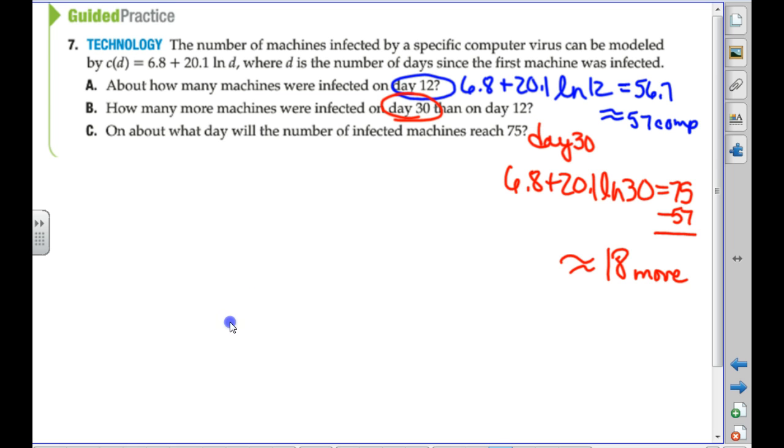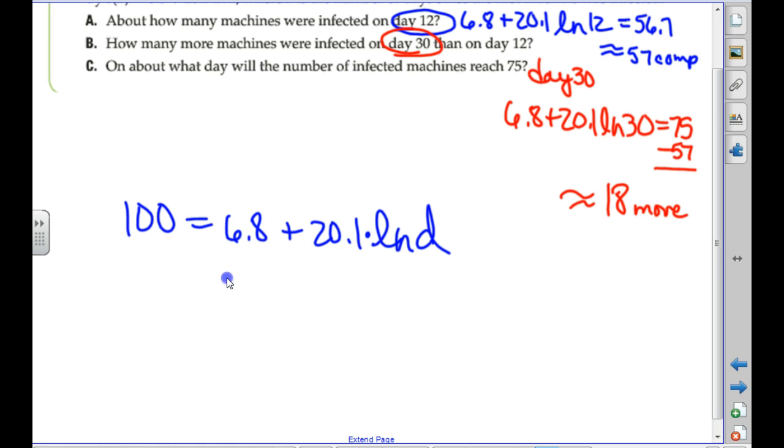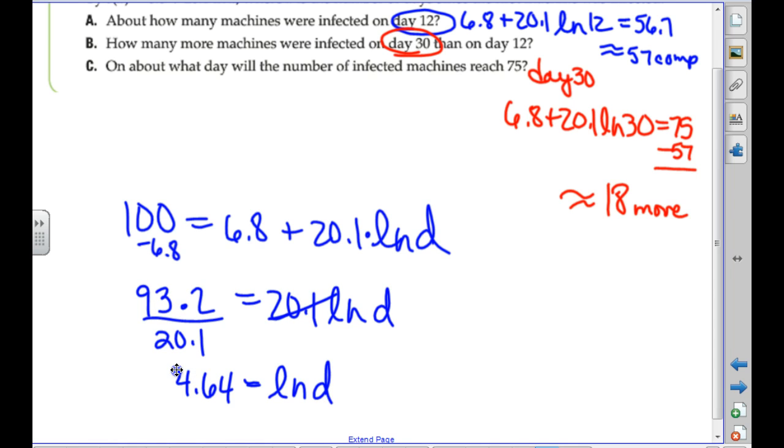But if we, can I model something for you that you're going to have to do soon? If it said, on what day does it reach 100 computers? Right now, the only way you know how to do that is by graphing. But explain to me the algebra that would start our process here. Subtract 6.8, which is 93.2. Then, divide by 20.1. So 4.64? Almost. We're going to rewrite this. How would you rewrite that sentence? E to the 4.64. You're supposed to all know the definition of log, right? E to the, this is the answer, the power equals D. So if you type that in, you would get how many days it would take.